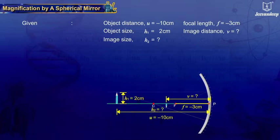To find out the distance of the image from the pole, we use the formula: 1 upon V plus 1 upon U is equal to 1 upon F.